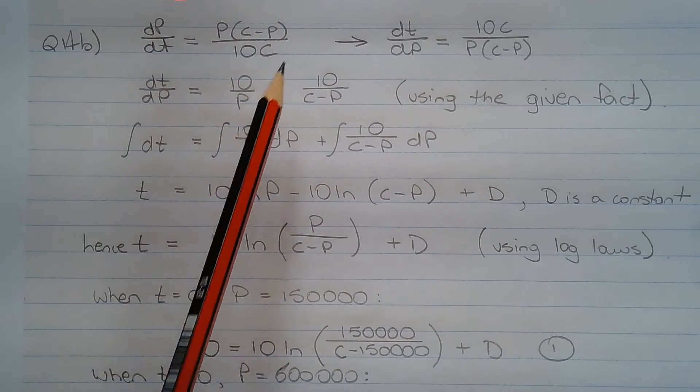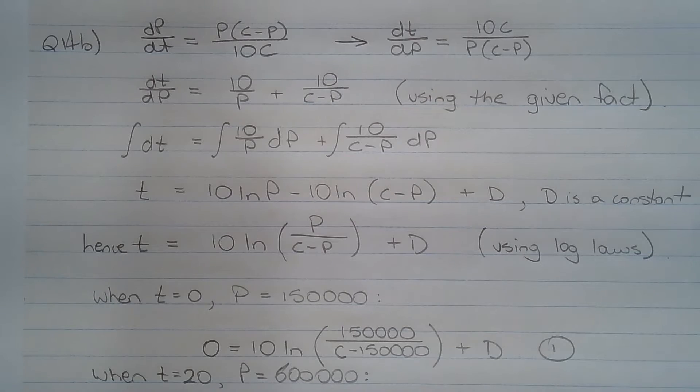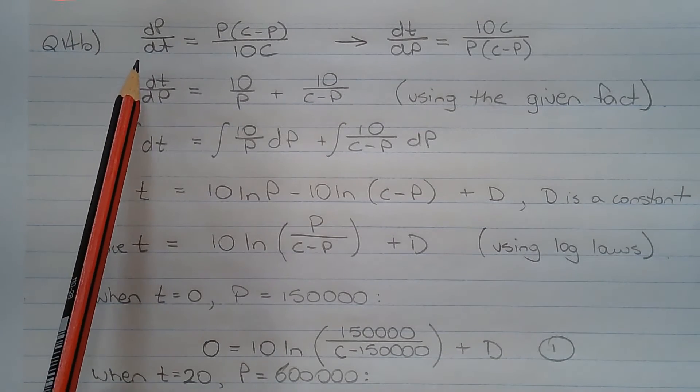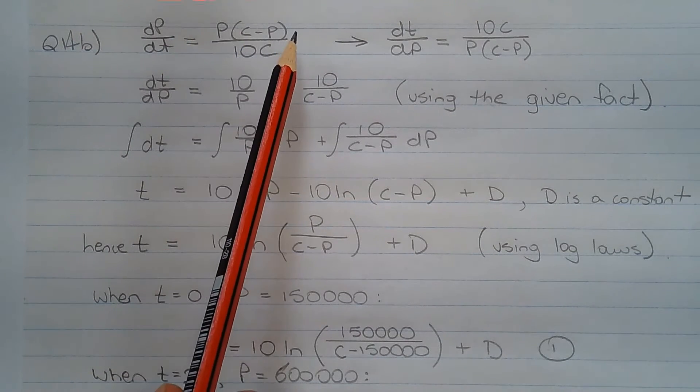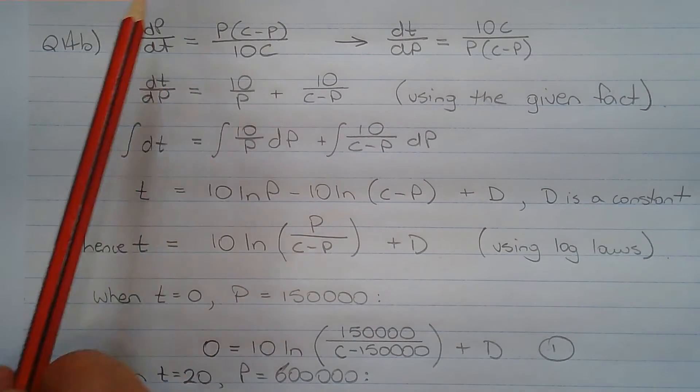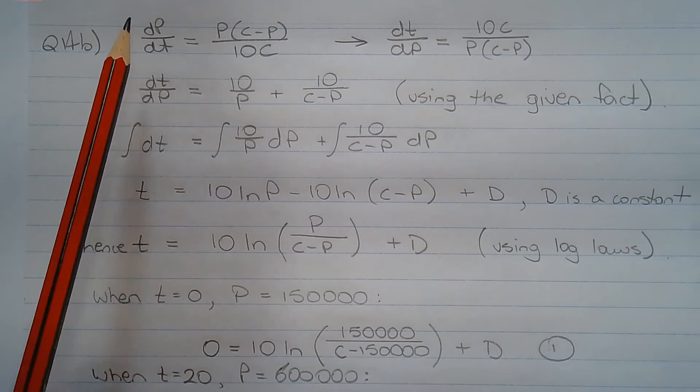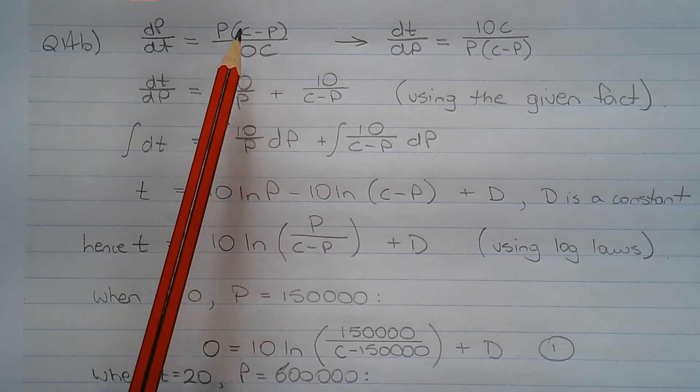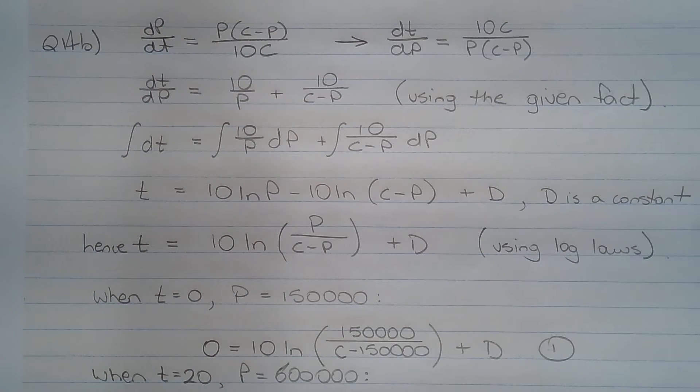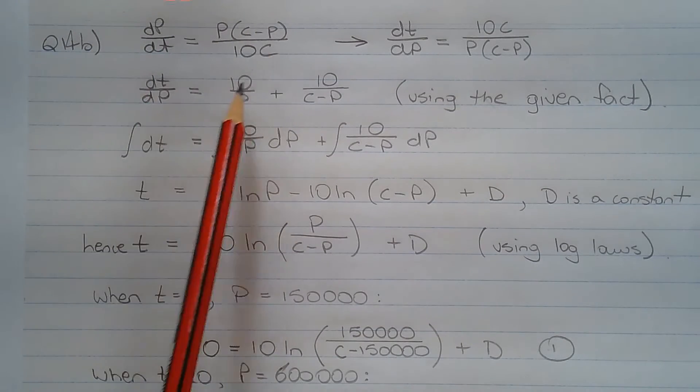My first step was to express the differential equation without using decimals. So dp/dt equals p(c minus p) over 10c. This is a separable differential equation. Notice that the numerators of the fractions on both sides contain the variable p.